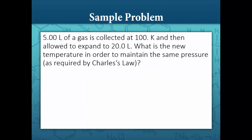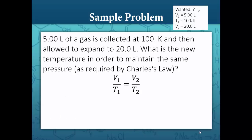Here's another sample problem. 5.00 liters of a gas is collected at 100 Kelvin and then allowed to expand to 20 liters. What is the new temperature in order to maintain the same pressure? We want to find the new temperature. We're given an initial volume of 5 liters, an initial temperature of 100 Kelvin, and a new volume of 20 liters. We'll use Charles's law: V1 over T1 is equal to V2 over T2. We want to solve for T2, which is a little more challenging because it's in the denominator.